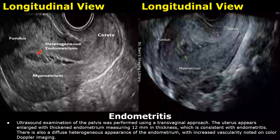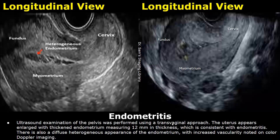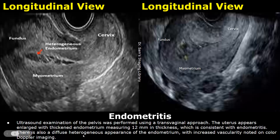Now we will look at reporting for pathologies. The first case is endometritis. You can start by writing how the ultrasound was performed, whether transvaginal or transabdominal. Then you can talk about the size of the uterus. In endometritis, it can be enlarged with thickened endometrium and increased endometrial thickness — in this report it is 12 millimeters, which is consistent with endometritis. There is also a diffuse heterogeneous appearance of the endometrium with increased vascularity noted on color Doppler.